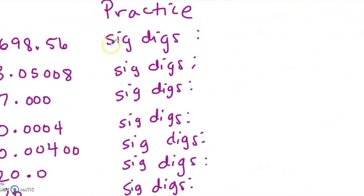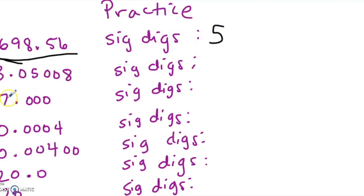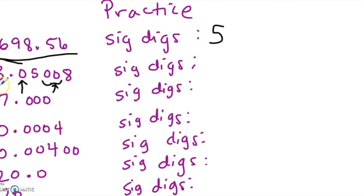Here are some practice problems. Try 698.56 — all non-zero digits, so there are 5 significant digits. What about 3.05008? Using the rule that zeros between non-zero digits are significant: the zero between 3 and 5 is significant, and the two zeros between 5 and 8 are significant, so you count all digits — that gives 6 significant digits.